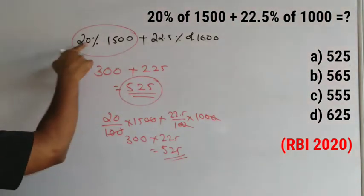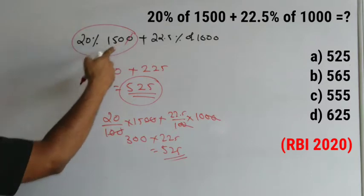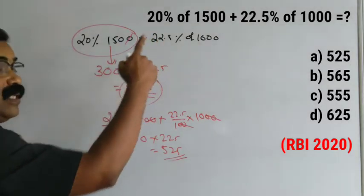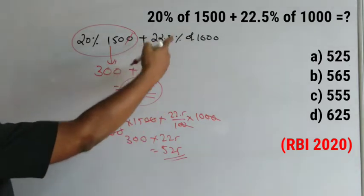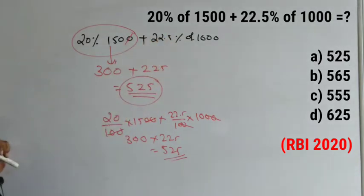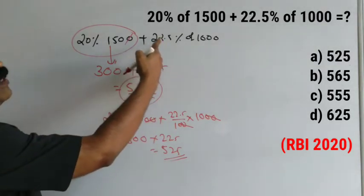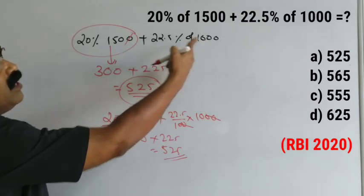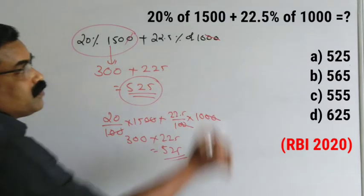Just remember: 10% of any number — just move the decimal point. So 20% of 1500 is 300, directly write it. For 22.5%, you can use the doubling trick to get 45%, since we want to remove the decimal point. Since the number is 1000, you can also directly apply the percentage — percentage means divided by 100, so you can cut two zeros from 1000.